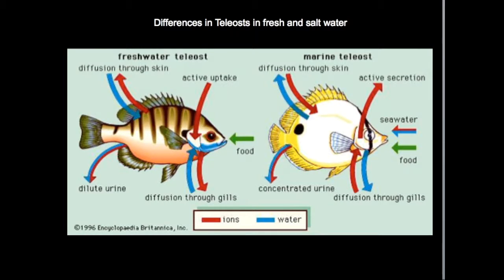Freshwater fish have the opposite problem, where water is constantly trying to flow into their cells through their skin as they live in a hypotonic environment. To get around this, they have to constantly keep urinating as they swim, since they are constantly taking on water and need to remove it from their bodies. Freshwater teleosts also have chloride cells in their gills, but rather than pumping ions out, these cells pump sodium and chloride ions against the concentration gradient into the fish's blood through their gills, so they can use these ions in cellular processes.